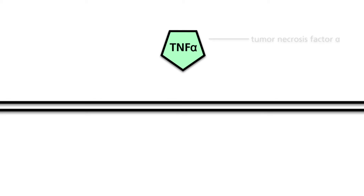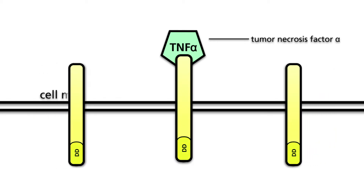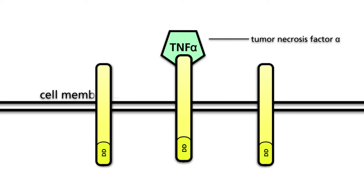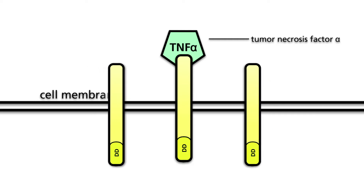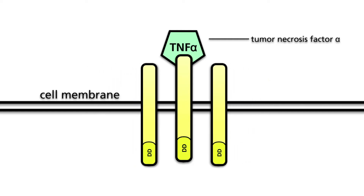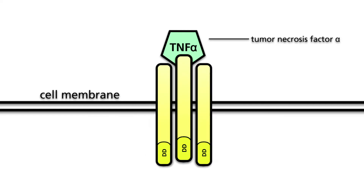First, we see here the canonical pathway. The canonical pathway is activated by different cell membrane receptors involved in inflammatory reactions. Here, the tumor necrosis factor receptor 1 is depicted as the starting point of the signaling cascade.